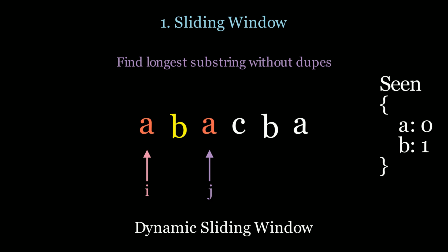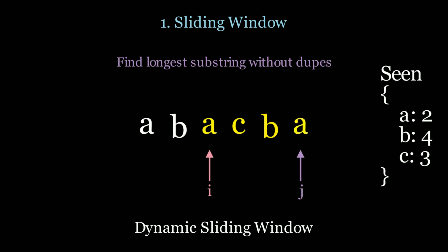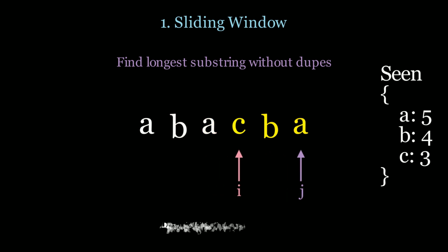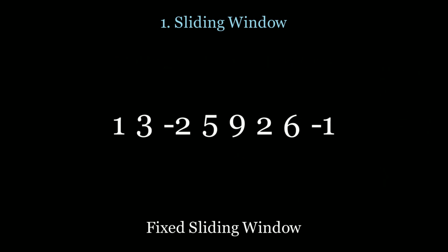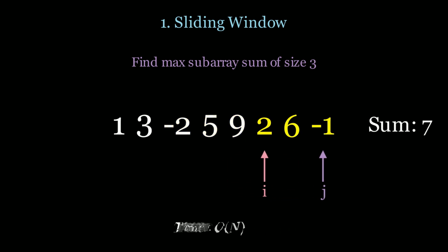When we find the duplicate 'a', we move our i pointer until we're valid again and then move j. When we find the duplicate 'b', we move i again and continue moving j until we hit the end of the array. Notice that in this approach we're O(n) instead of O(n²). This is called a dynamic sliding window because the window changes size throughout the algorithm. For a fixed sliding window — for example, finding the maximum subarray sum of size 3 — we initialize a window of size 3, slide it along the array, and track the max sum. This is also O(n).